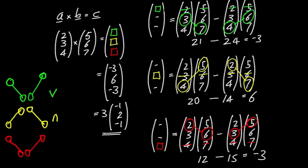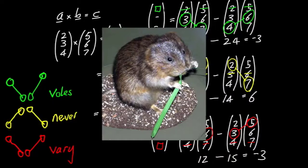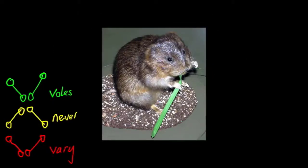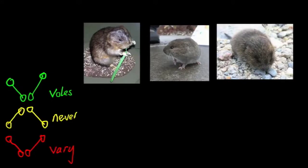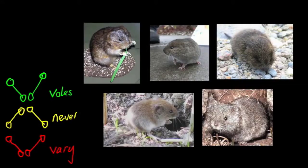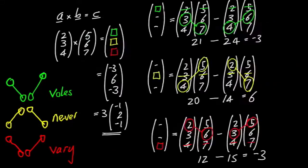Notice the pattern: it was falling diagonal minus rising diagonal for the first component, rising diagonal minus falling diagonal for the second, and back to falling minus rising for the third. These patterns look like letters — a V, an N, and a V. I like to remember this as 'voles never vary.' The important thing is the first and third components use falling minus rising (a V shape), and it alternates.